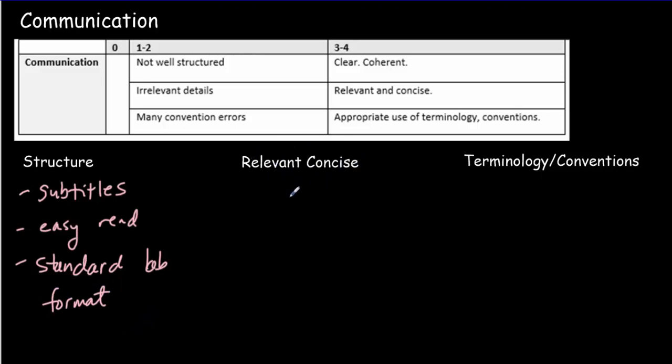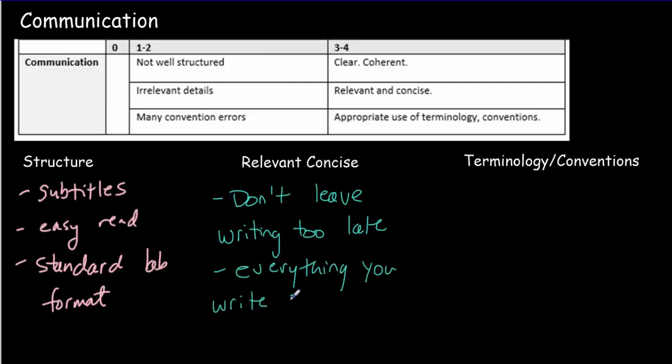The second aspect: is it relevant and concise? Typically students don't do very well on this, and that's because they start doing their writing too late, so their writing tends to be more like a journal. We write journals to sort out our thoughts. In a report, you want to have already sorted out your thoughts. So don't leave writing too late. Everything that you say within your investigation should address the research question. Everything you write should help answer your research question. If it's not doing that, it's a tangential point and you shouldn't include it.